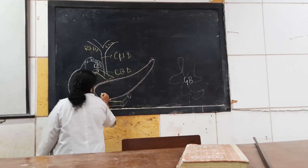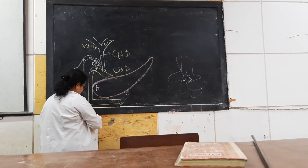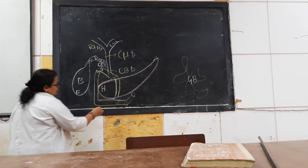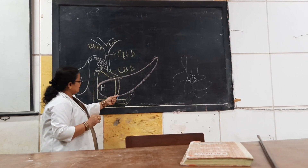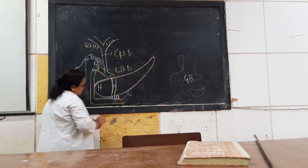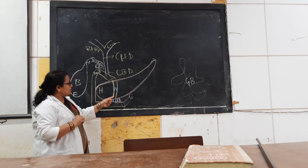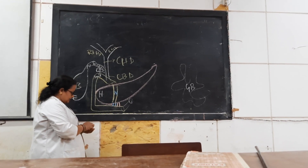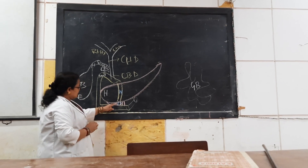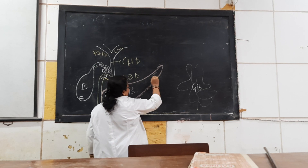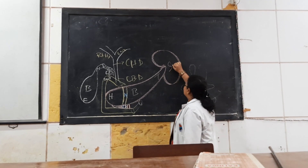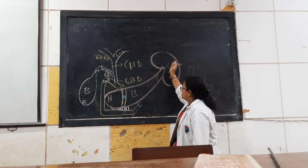The parts of the pancreas are: the head, neck, body, and tail, along with the uncinate process below the head. Behind the neck of the pancreas, we find the formation of the portal vein and the superior mesenteric artery. The tail of the pancreas is in contact with the hilum of the spleen.